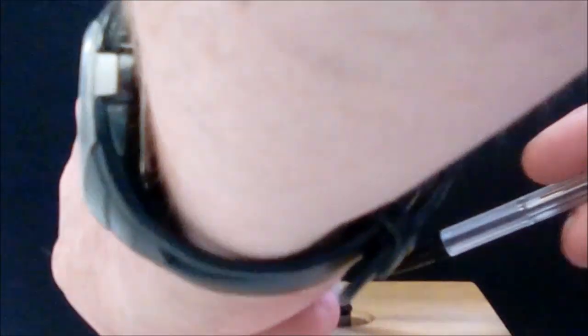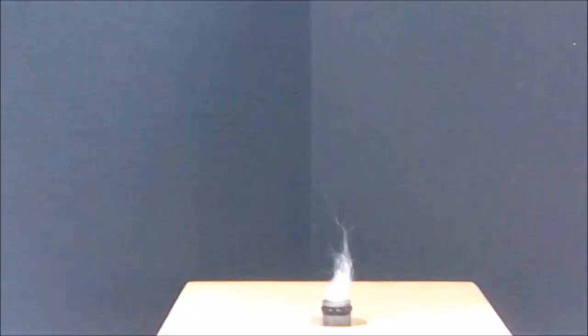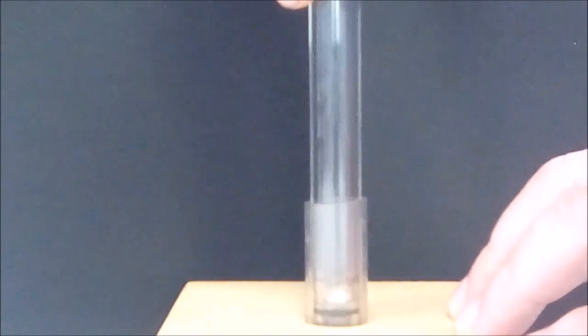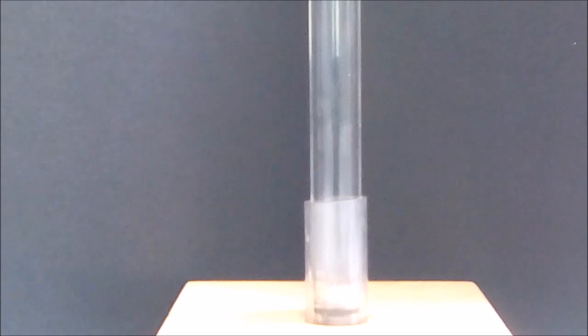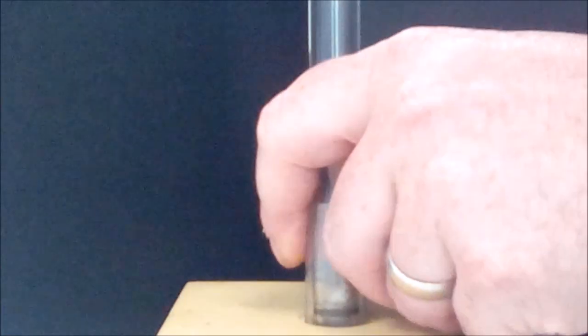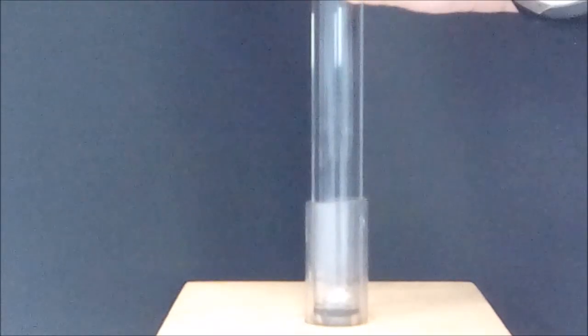So what we do is we place a tiny piece of cotton wool just in the bottom there. Then we'll place our tube over the top. Put the piston just in and then we can press it really quickly.